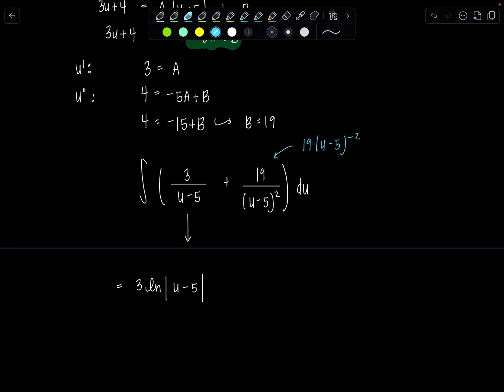And then for the next term, if you need a little reminder, this is the same as 19 times u minus 5 to the negative second. So when I take the antiderivative, I'm going to add 1 to the exponent and divide by the new exponent. So then I have minus 19 u minus 5 to the negative first, and now put plus C. Put plus C immediately.